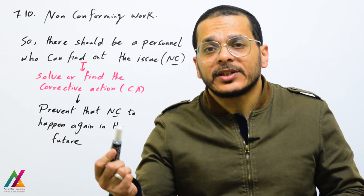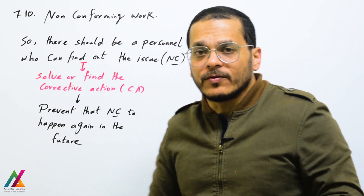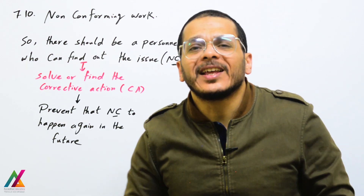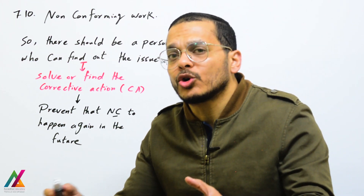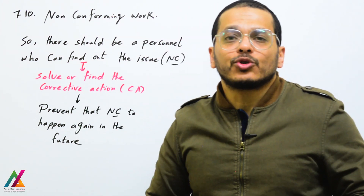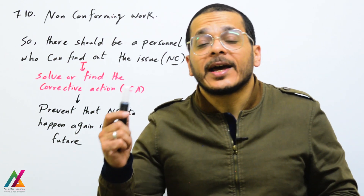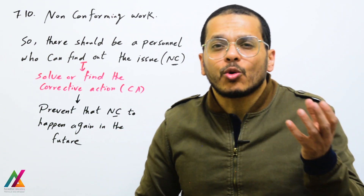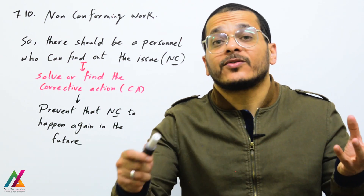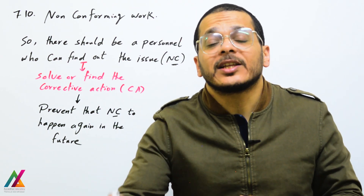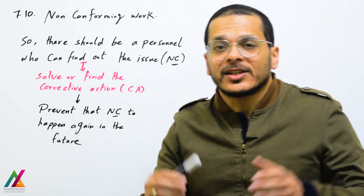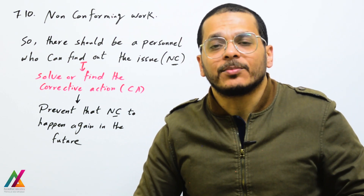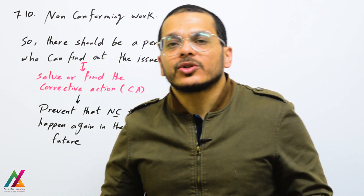After finding the issue, who will find the corrective action to solve this non-conforming work? That can be the analyst of the unit and also the technical lead of the unit. And who is responsible to prevent this non-conforming work from happening in the future? That can be the analyst, the technical lead, and also the quality lead of the lab, who can give advice to prevent recurrence since he is responsible for maintaining the quality management system.